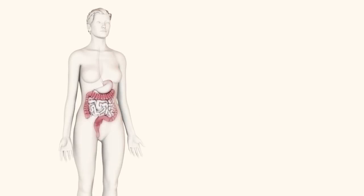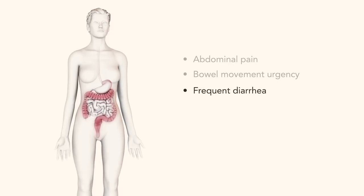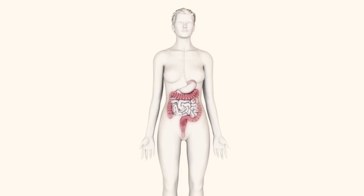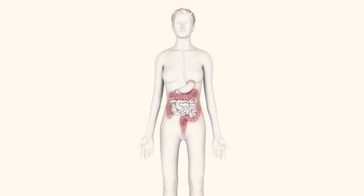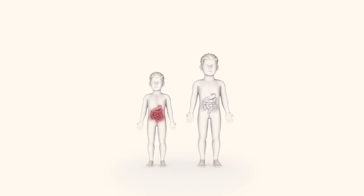The most common symptoms of UC include abdominal pain, urgency to have a bowel movement, and frequent diarrhea, which often contains mucus or blood. Together, these symptoms may result in a loss of appetite and weight loss. Ulcerative colitis can even cause growth delays in children.